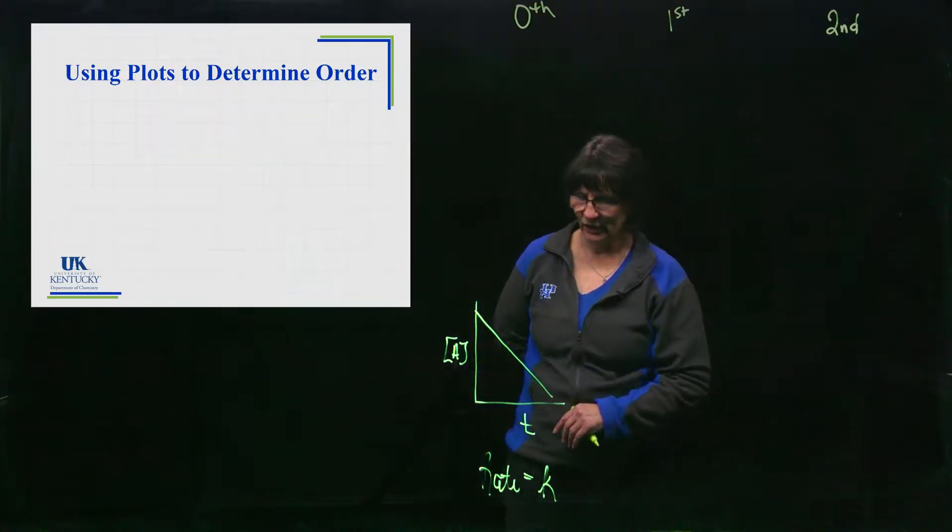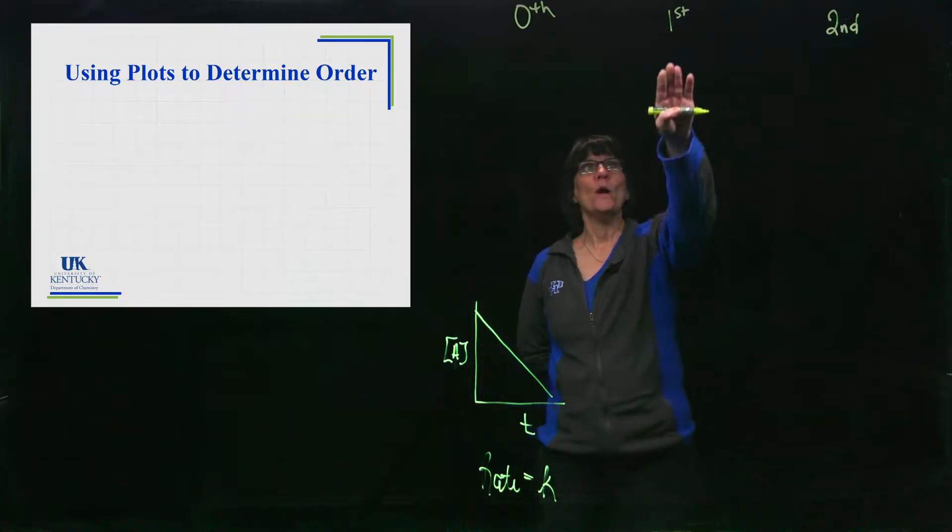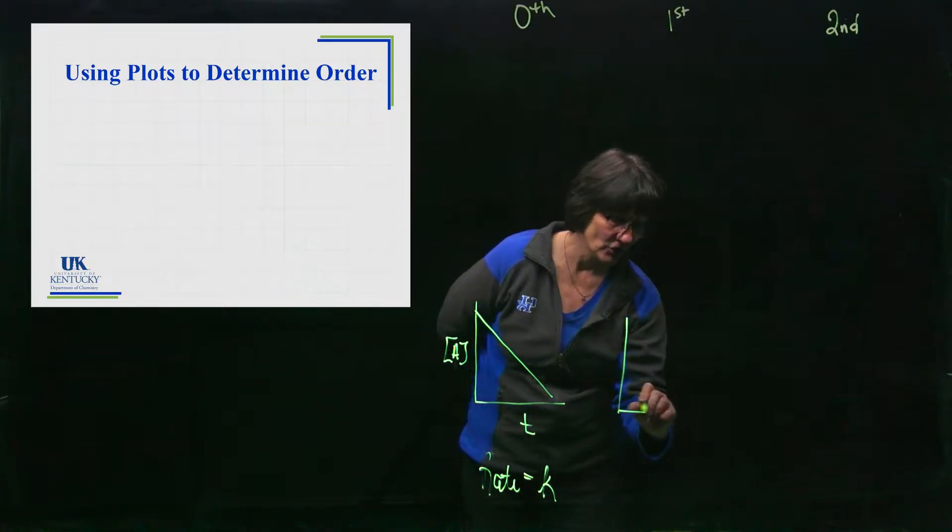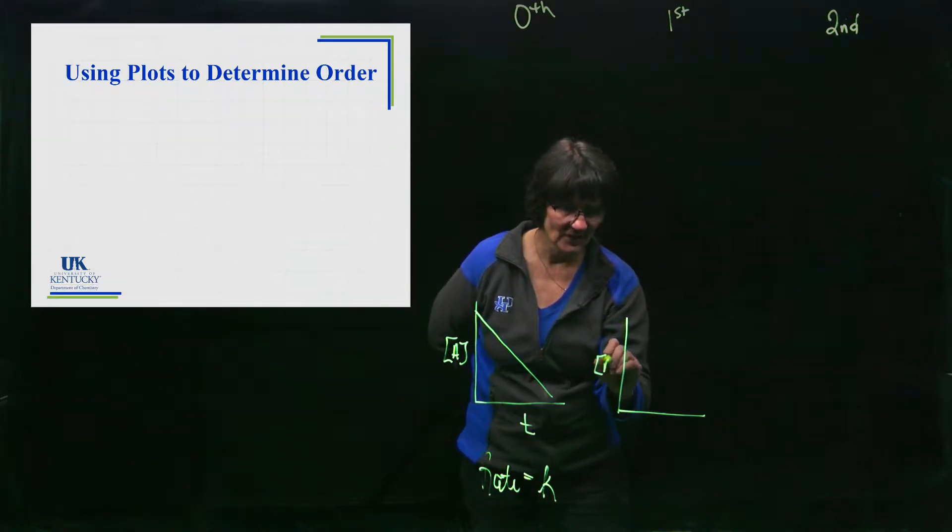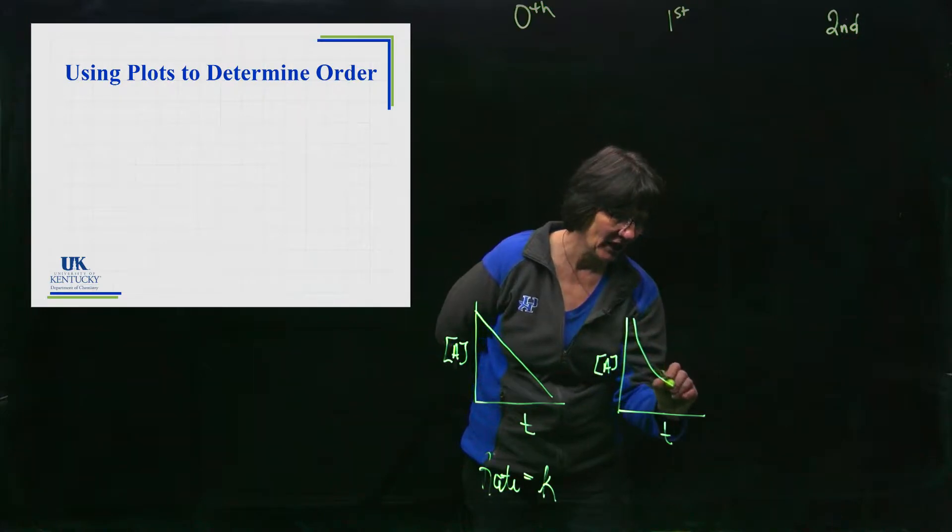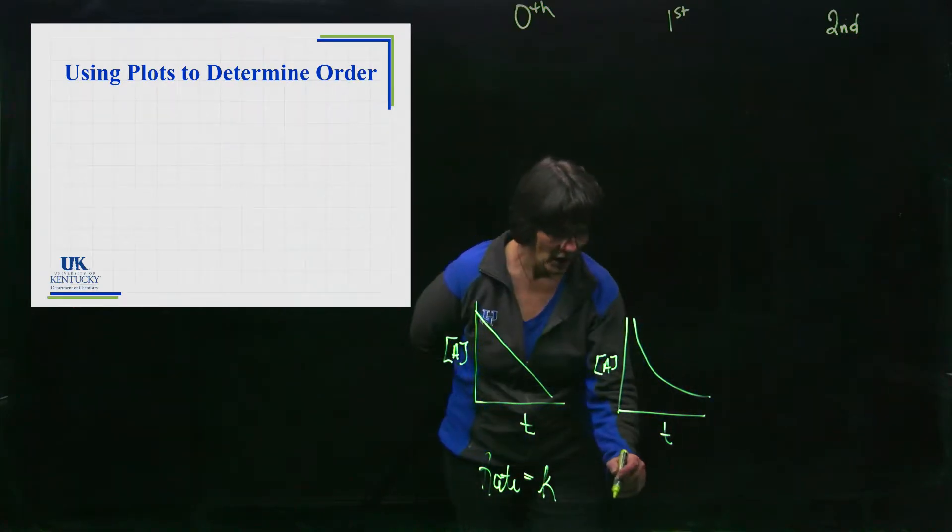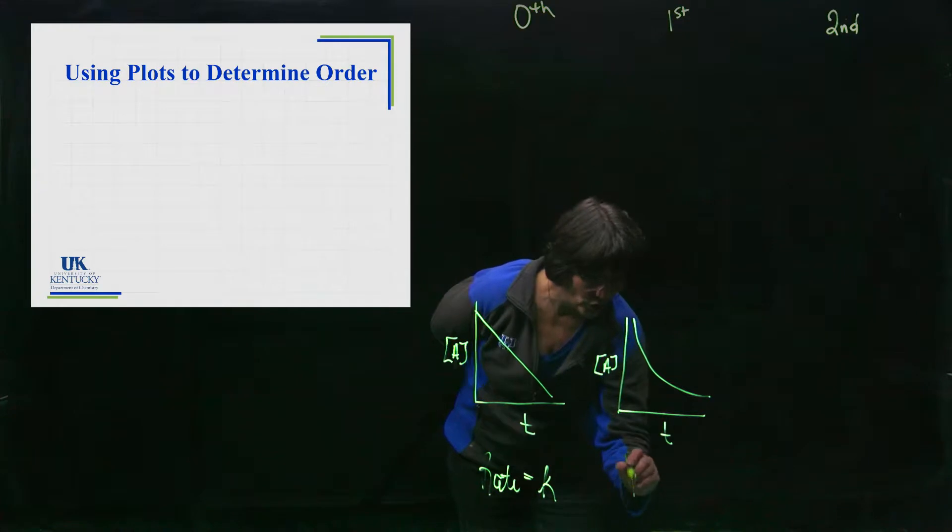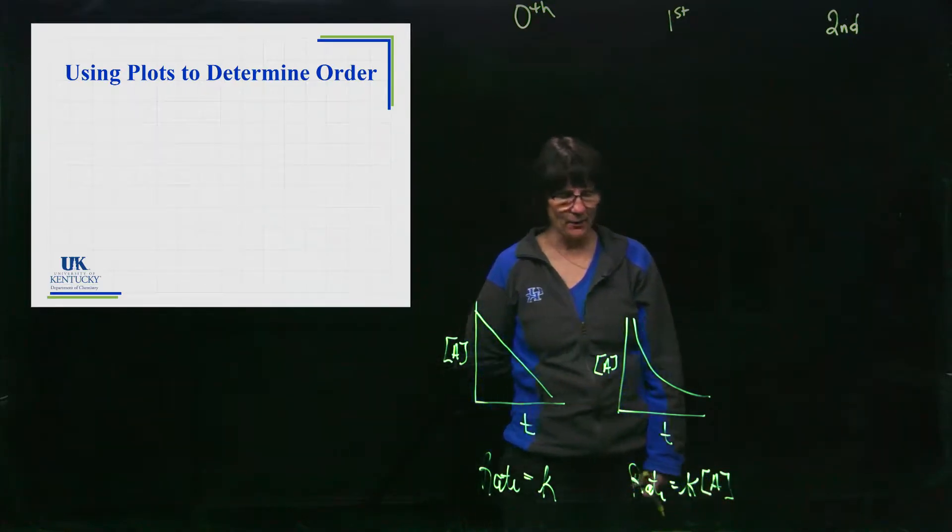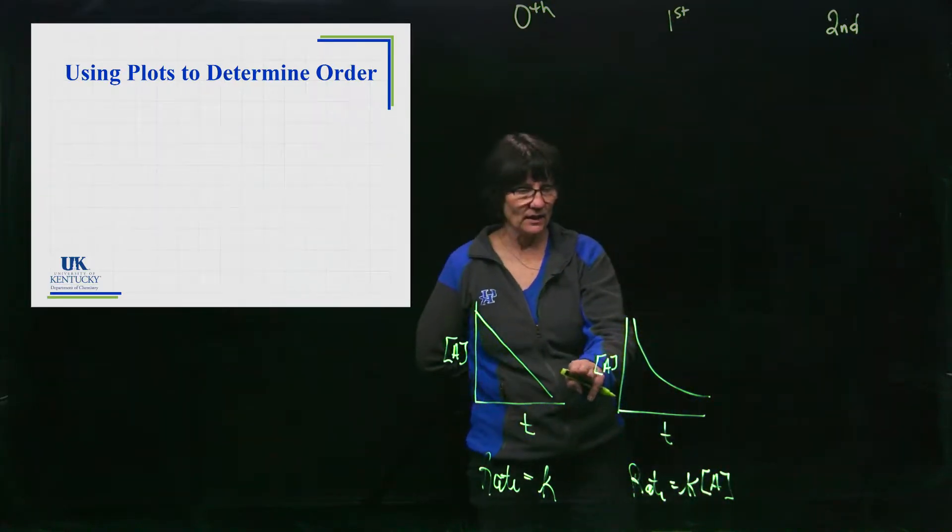Remember it's zeroth order so rate is just a constant and you're going to have that nice linear graph. When it's first order and we plot concentration versus time, we're going to get an exponential decay that looks something like this. So this is first order, rate is equal to K times [A] raised to the first power.